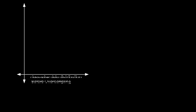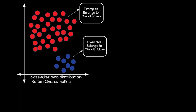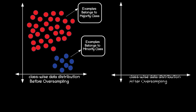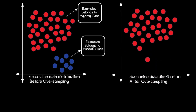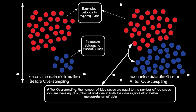Consider a dataset where red circles belong to the majority class and the blue circles belong to the minority class. This is the class-wise data distribution before oversampling. After oversampling, the number of blue circles representing instances from the minority class is increased by randomly selecting and duplicating blue circles from the minority class. After oversampling, the number of blue circles equals the number of red circles. Now we have an equal number of instances in both classes, indicating better representation of our data.